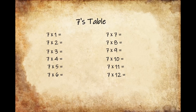Now for the 7s table. 7 times 1 gives us 7, 7 times 2 gives us 14, 7 times 3 gives us 21, 7 times 4 gives us 28, 7 times 5 gives us 35,